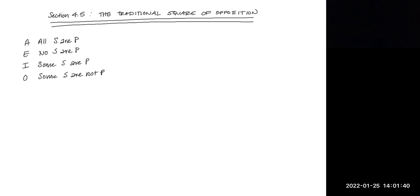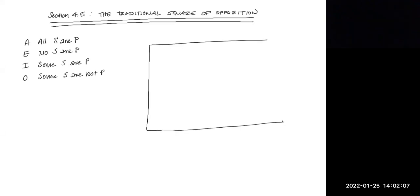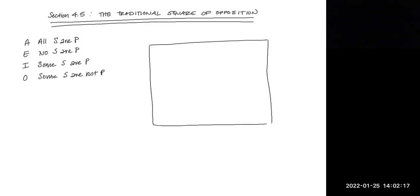The traditional square of opposition — and we are not using the modern square, only the traditional square — shows us how to relate each of these categorical propositions in standard form to one another and helps us work proofs. It is set up literally in a large square. The A statement is always in the top left corner, the E statement top right, the I statement bottom left, and the O statement bottom right. That's where they live.